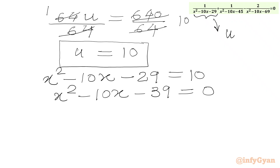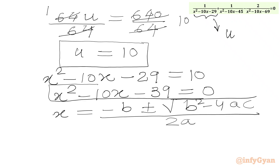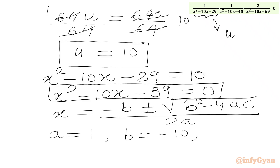Now we can use the quadratic formula: x equals (-b ± √(b² - 4ac)) / (2a). As per our quadratic equation, a is the coefficient of x² which is 1, b is the coefficient of x which is -10, and c is the constant which is -39.